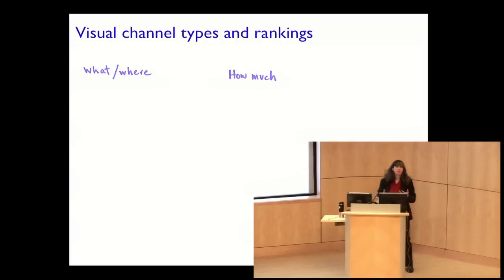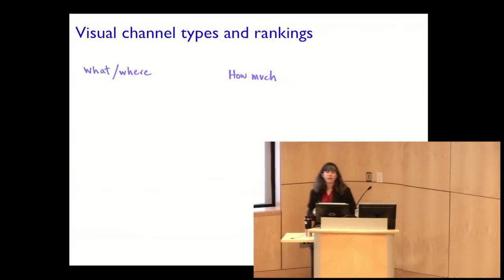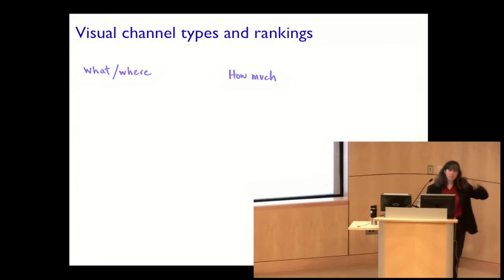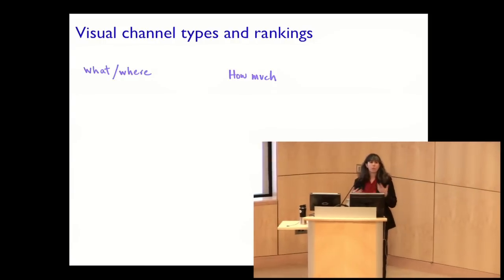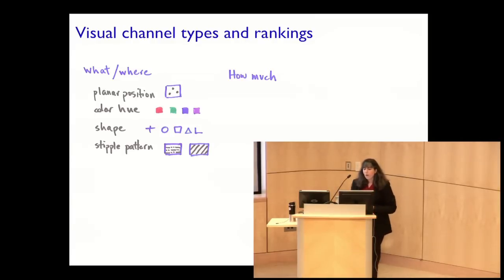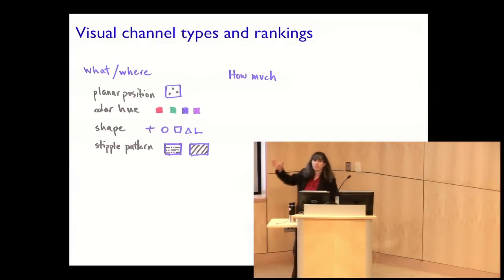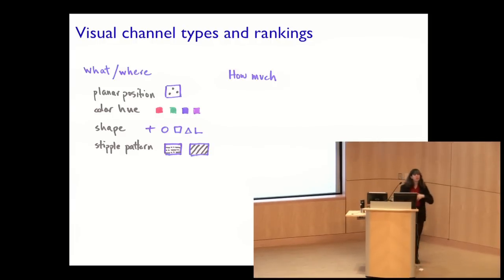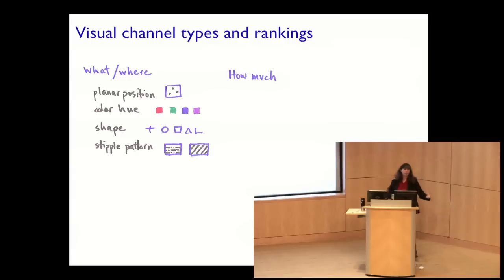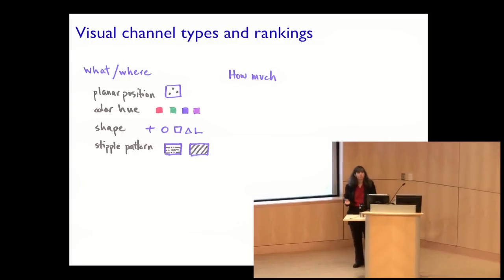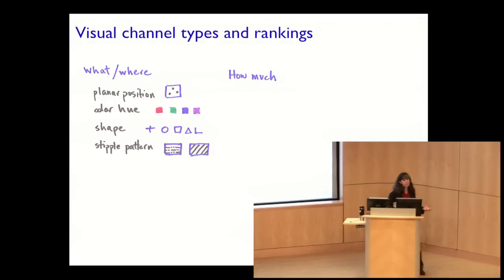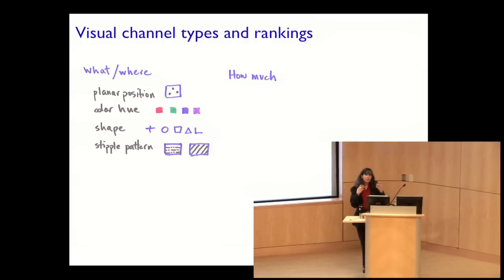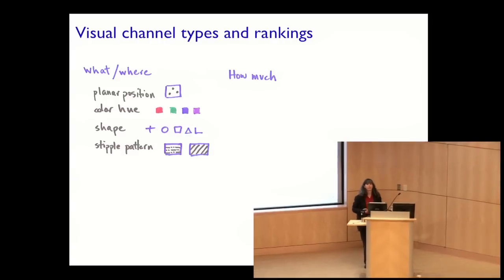The fundamental breakdown with visual channels is their type — built into our perceptual systems. One set of channels is the 'what' or identity channels: planar position is a 'where'; hue tells you what color something is — is it red, blue, yellow, purple? Shape tells you what shape — circle or square? Pattern tells you whether it's dashed or dotted. These are the visual channels we intrinsically interpret as telling us what something is.